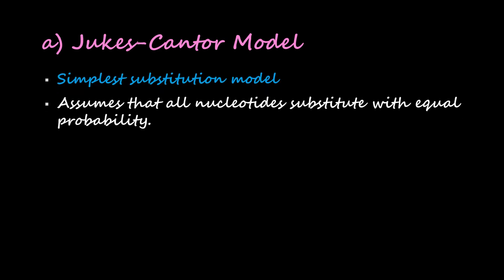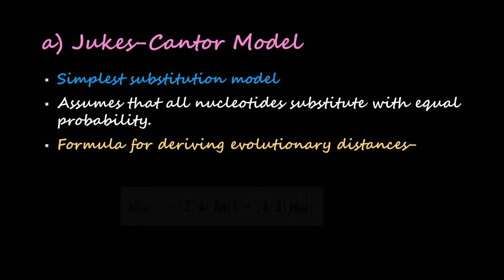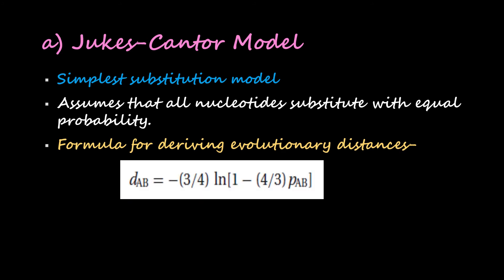First is Jukes-Cantor model. It is the simplest substitution model and assumes that all nucleotides substitute with equal probability. The formula for deriving evolutionary distances is: dAB = -3/4 ln(1 - 4/3 pAB), where dAB is the evolutionary distance and pAB is the observed sequence distance.